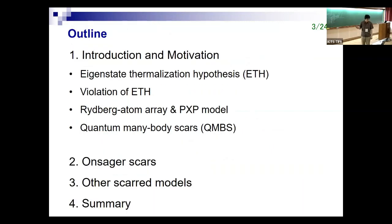Here's the plan for my talk. In the first part I'm going to give a brief introduction and motivation and explain what the ETH is, then introduce several classes of systems in which the ETH is violated. Then I'll explain some recent experiments about a Rydberg atom chain whose effective model is described by the PXP model, and overview some recent results for quantum many-body scars. In the second part I'll introduce a class of scarred models constructed using Onsager algebra, and in the third part some other classes of models.